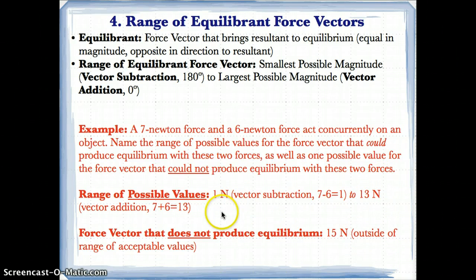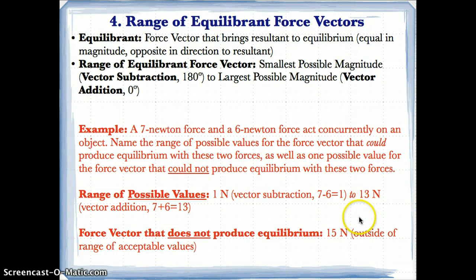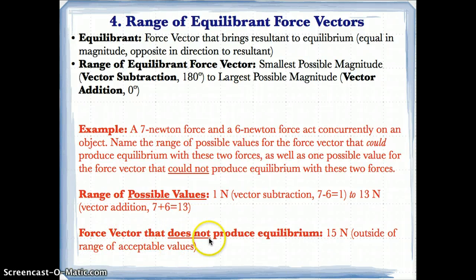Any number between one and 13 newtons inclusive will give you an equilibrant that produces equilibrium — so six, seven, 10, or 13 are all valid. The force factor that does not produce equilibrium is something outside that range. For example, 15 newtons could not produce equilibrium because it's outside the acceptable range of one to 13 newtons.